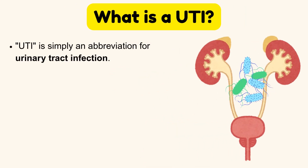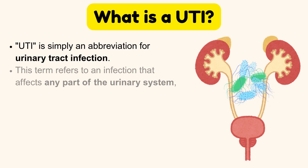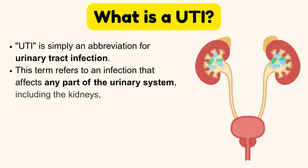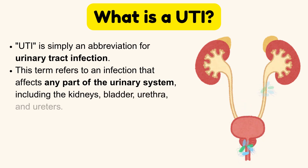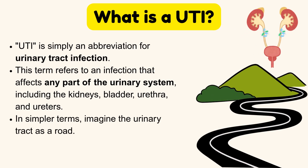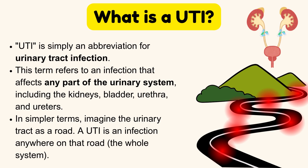UTI is simply an abbreviation for urinary tract infection. This term refers to an infection that affects any part of the urinary system, including the kidneys, bladder, urethra, and ureters. In simpler terms, imagine the urinary tract as a road — a urinary tract infection is an infection anywhere on that road, the whole system.